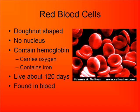Red blood cells, also known as erythrocytes, are kind of donut-shaped. You can see in the picture — they don't have a big hole through the center like donuts do, but they have that indentation that gives it that appearance. Red blood cells do not have a nucleus, but they do contain a structure called hemoglobin, a protein found in red blood cells that carries iron, oxygen, and carbon dioxide in the blood.